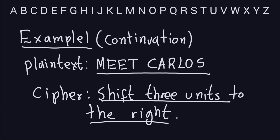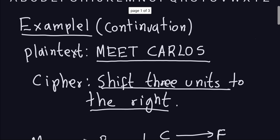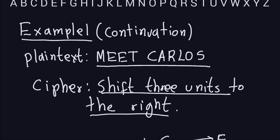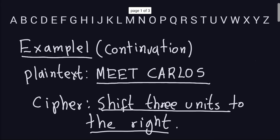Hello, this is a continuation from the example from last time. So let's recall what we were doing. We wanted to transform the plain text that we see here — 'meet Carlos' — into the cipher text by using the cipher shift three units to the right. You do that by looking at the order in which the English alphabet appears and shifting each letter three units to the right.